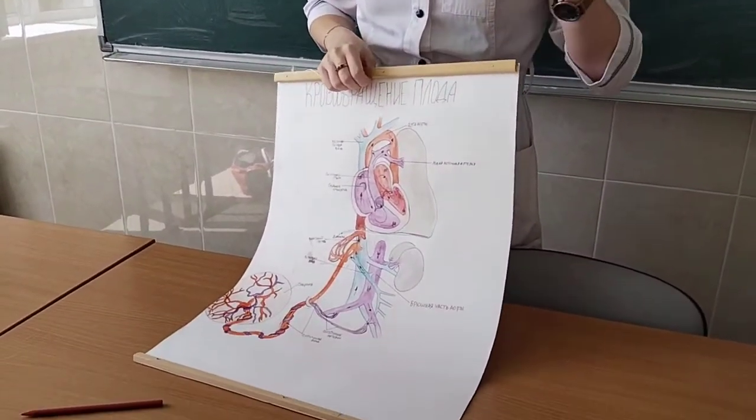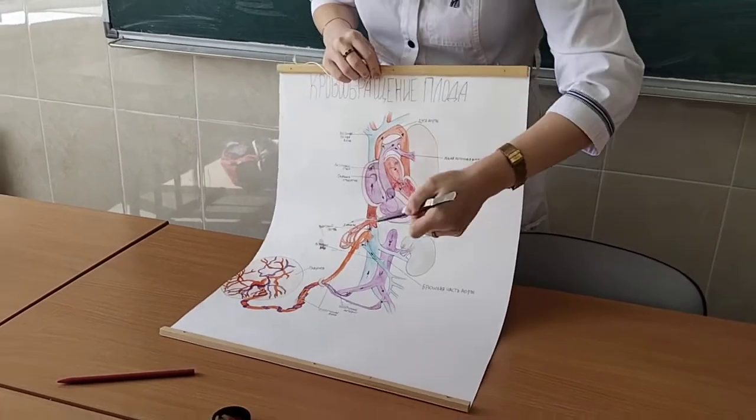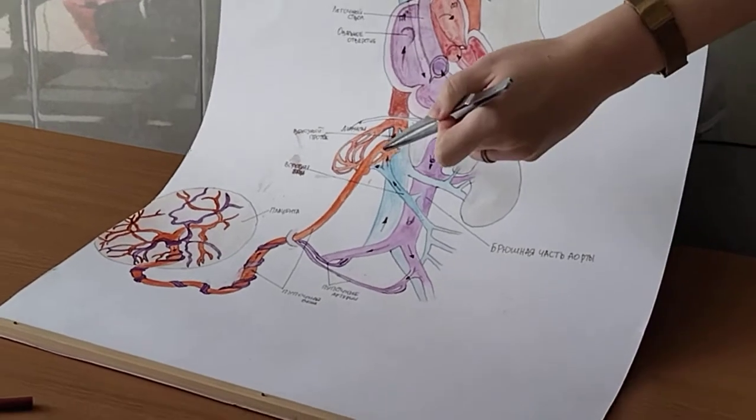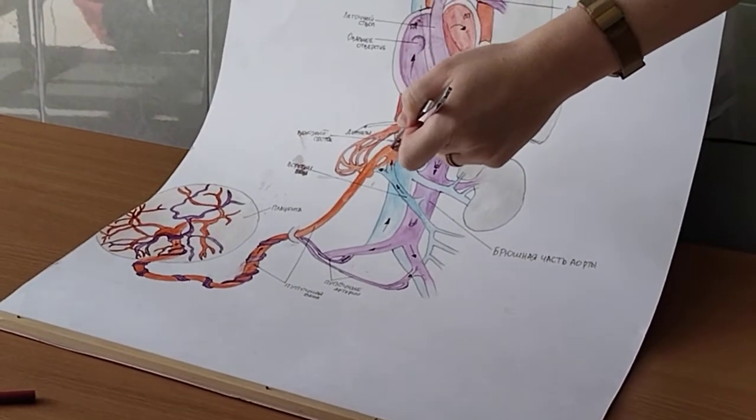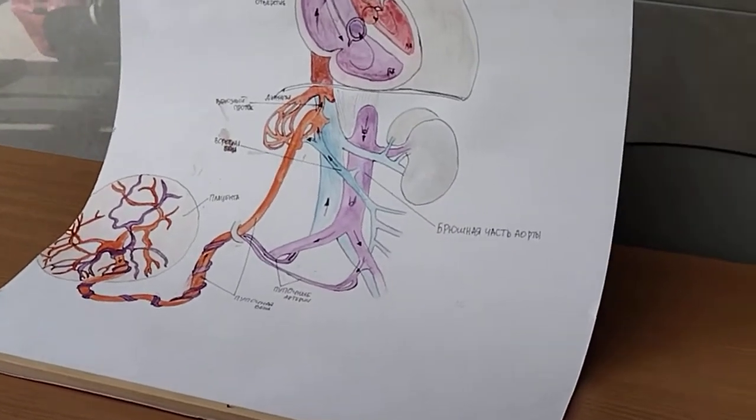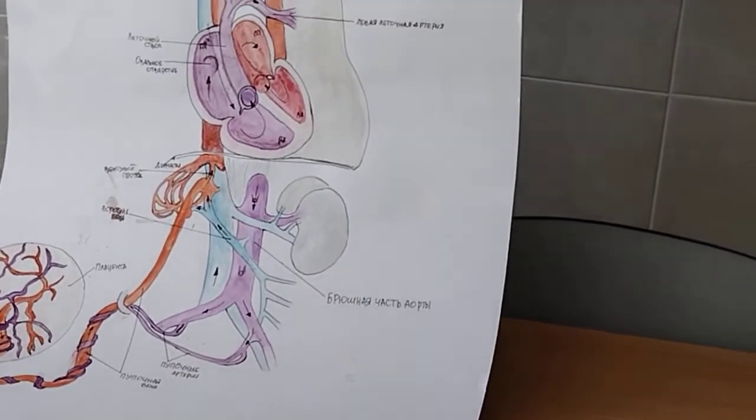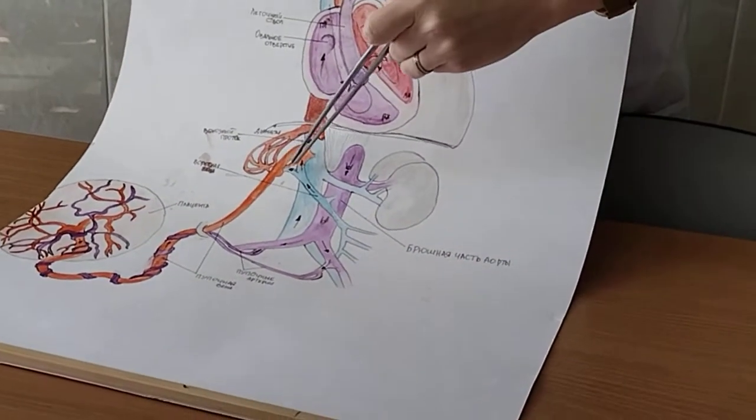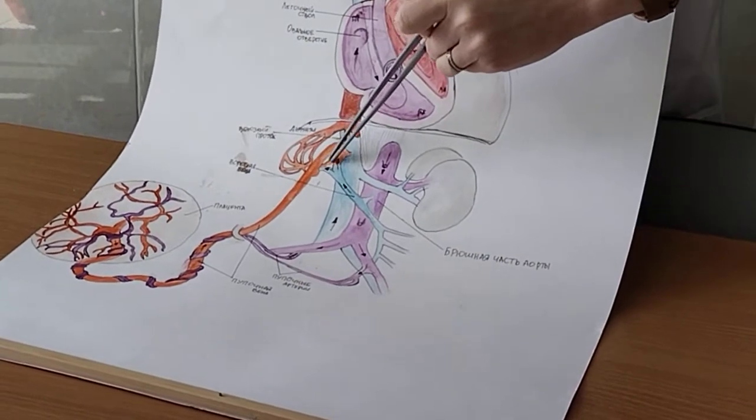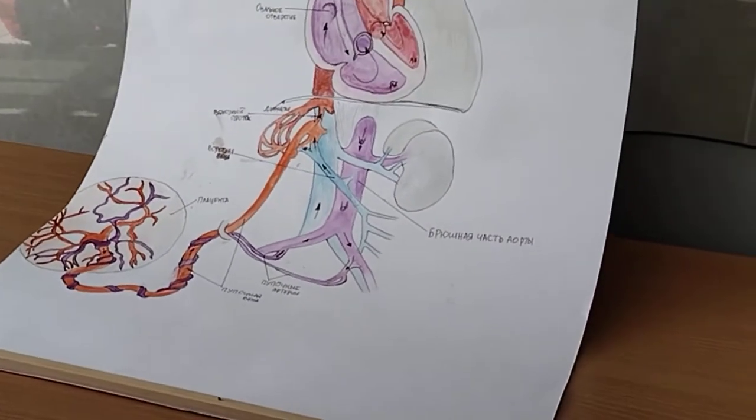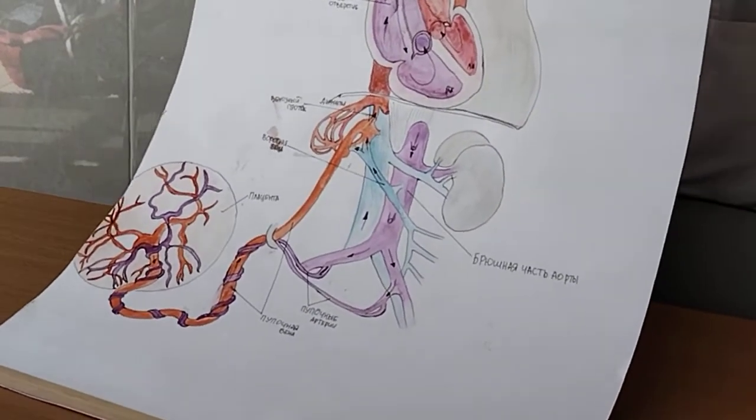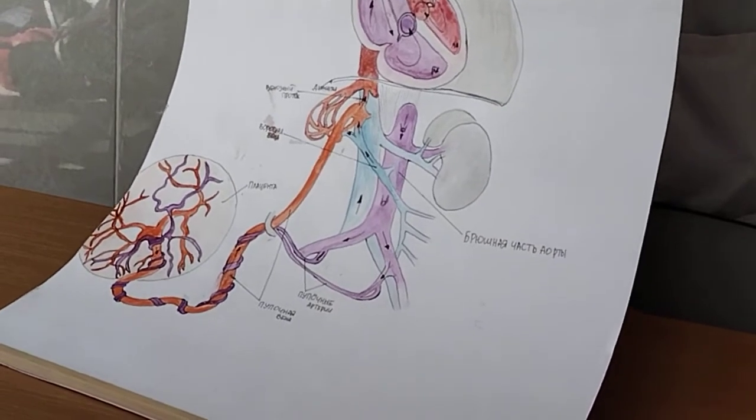One of the branches is the venous duct or ductus venosus. Yes, ductus venosus. It enters directly to the inferior vena cava. And by the moment of birth, it overgrows with connective tissue and forms the venous ligament. And the continuation of the umbilical vein joins the portal vein. And that's why the most oxygenated blood in the fetus comes to the liver, because the liver during the fetal period performs a very important function of blood cell formation.